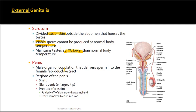The penis is the male organ involved in sexual intercourse — copulation — and delivers sperm into the female reproductive tract. The regions include the shaft, the glans penis (the enlarged part at the end), and the prepuce or foreskin, which is the folded cuff around the proximal end that is often removed during circumcision.